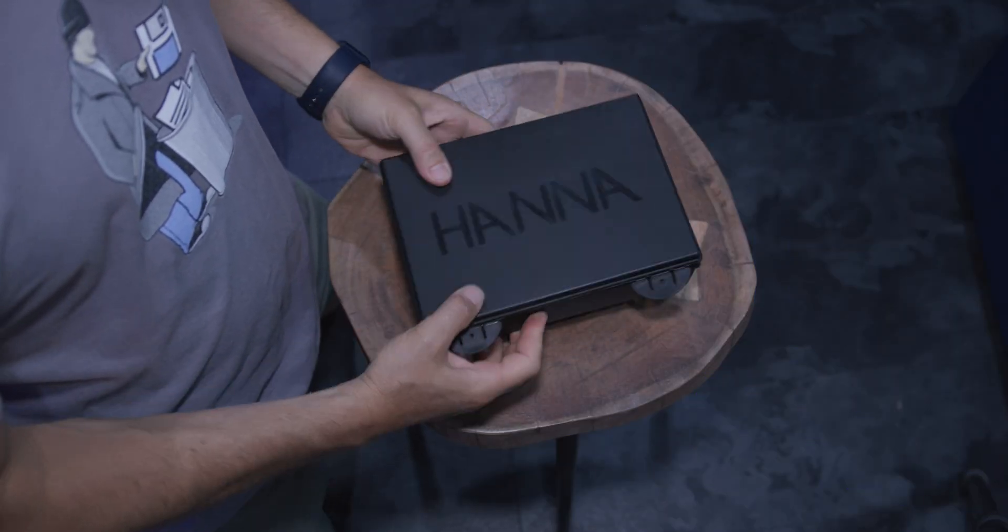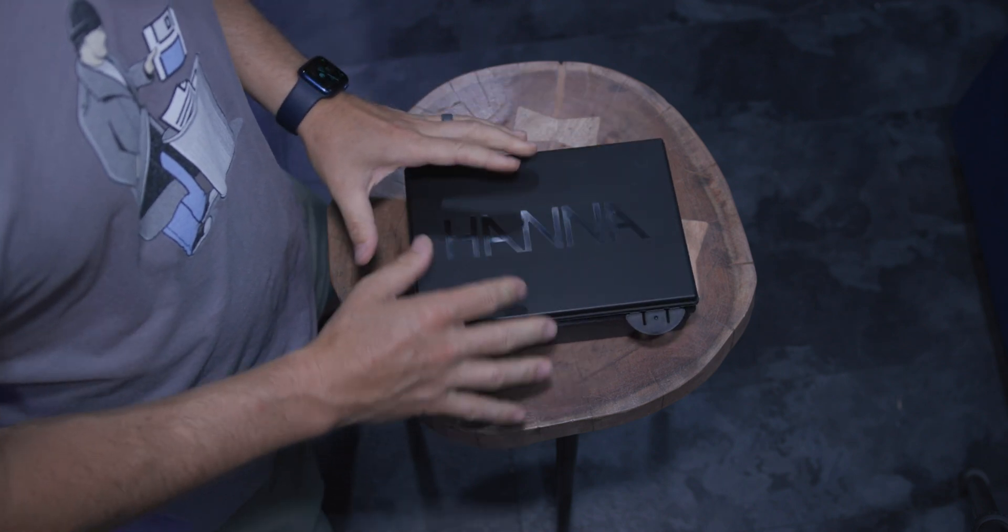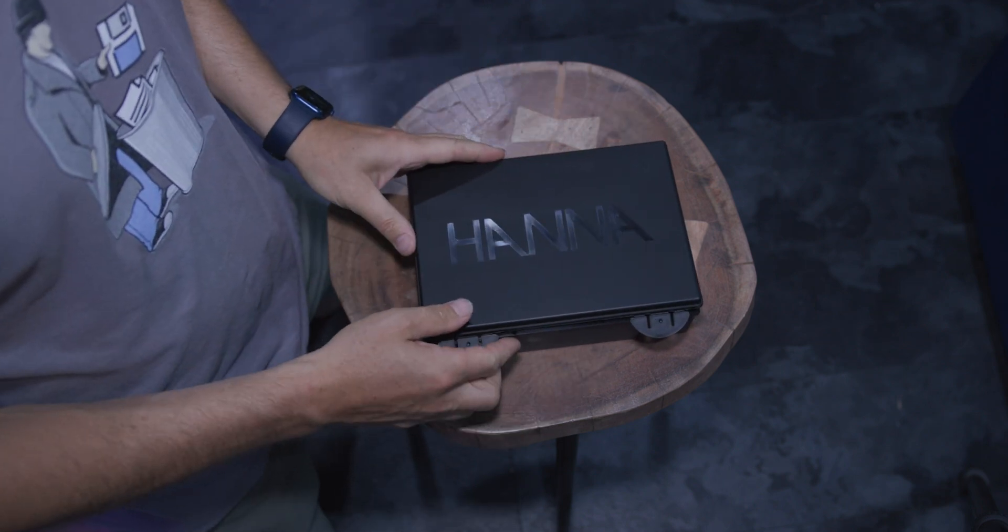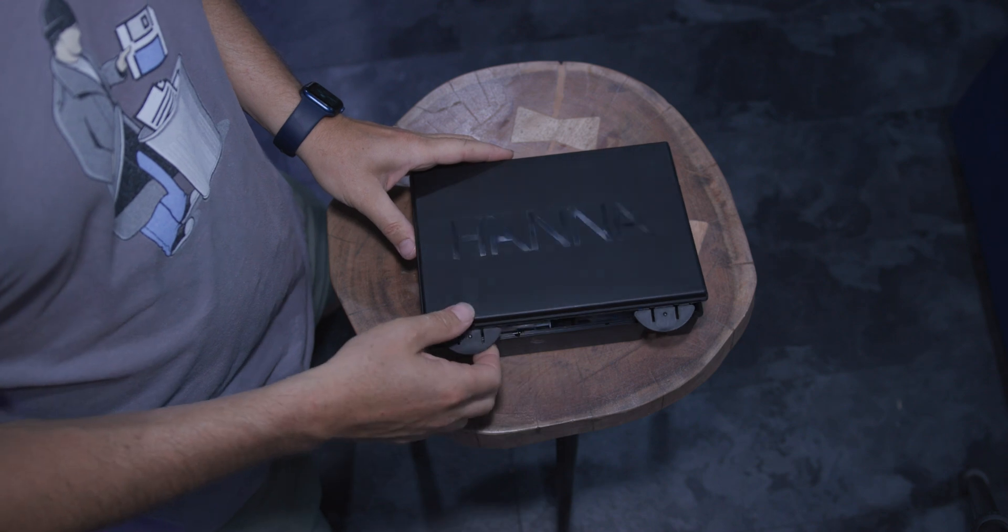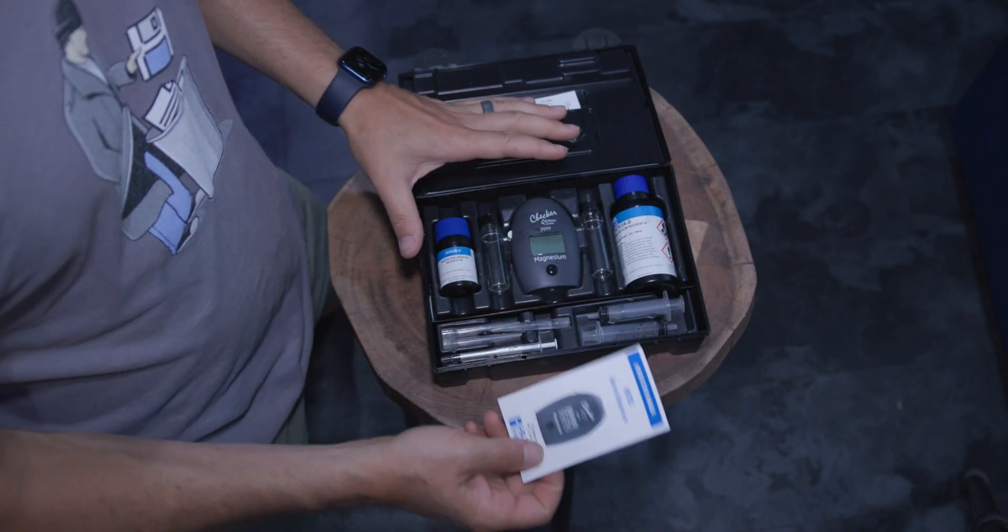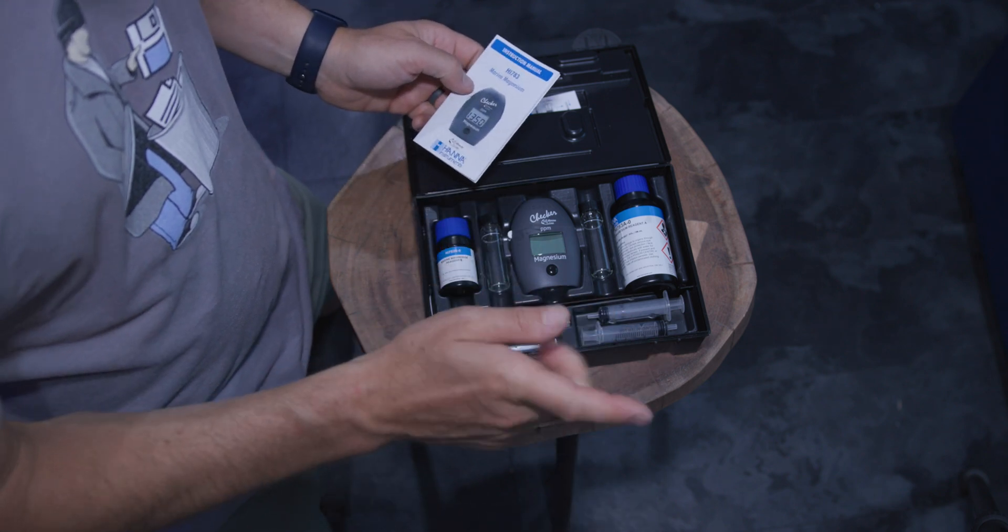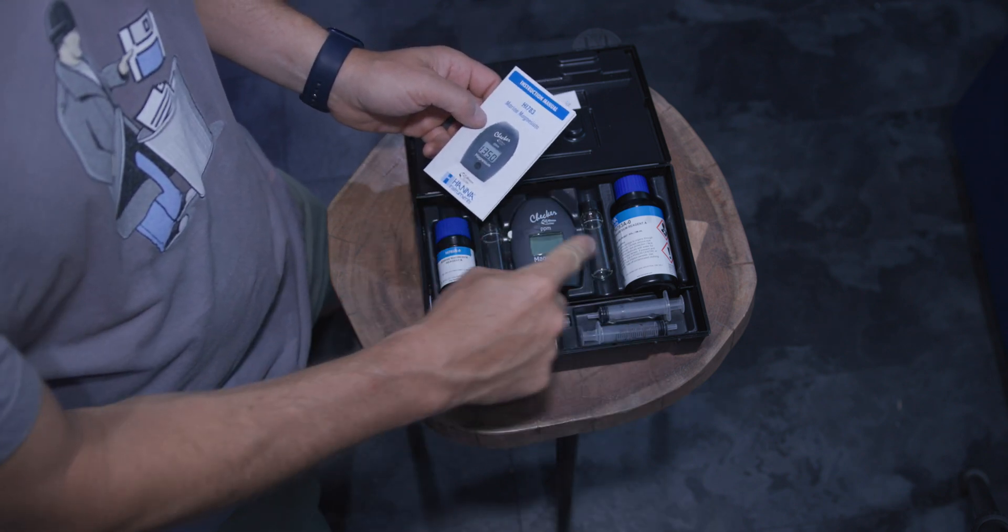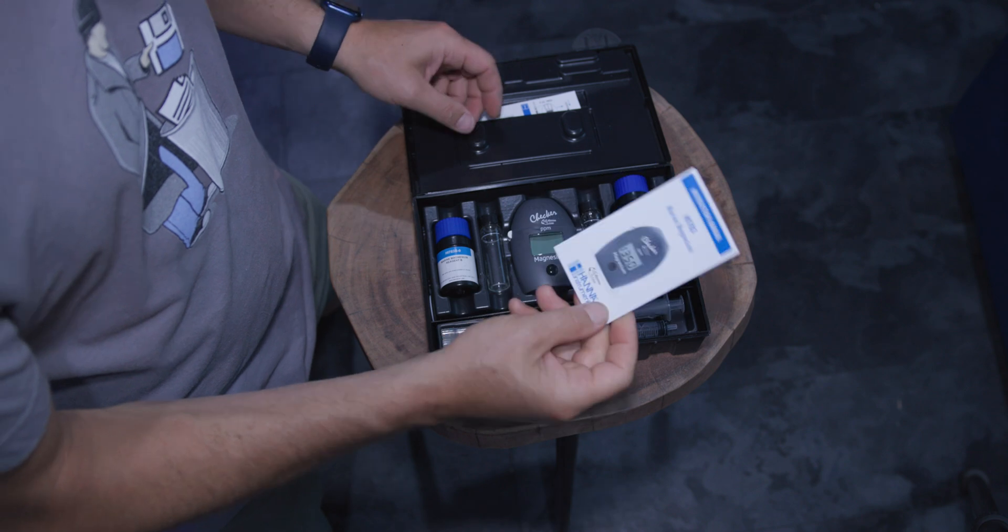All right, here we go. First thought, this is a bigger box than the alkalinity or the phosphate reagents or kits. I expect there's more to it. This is a tester unit sent to us. The boss used it. He sent it to me. If you're seeing some liquid in here, he's already used it. We have written instructions.